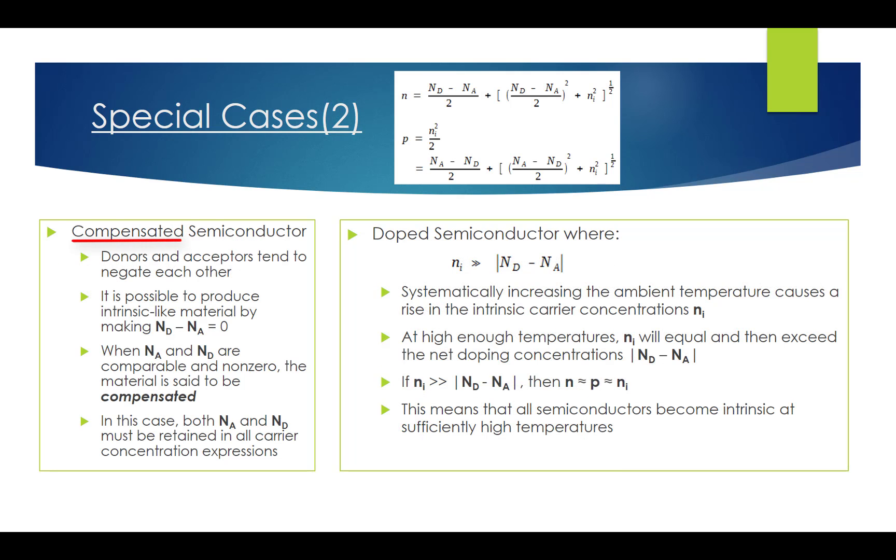The third special case is called a compensated semiconductor. From the general expressions of n and p, we can see that donors and acceptors tend to cancel each other. Actually, it is possible to produce intrinsic-like material by making Nd minus Na equals zero. In some materials, such as gallium arsenide, Na may be comparable to Nd. When Na and Nd are comparable and non-zero, the material is said to be compensated. If the semiconductor is compensated, both Nd and Na must be retained in all carrier expressions.